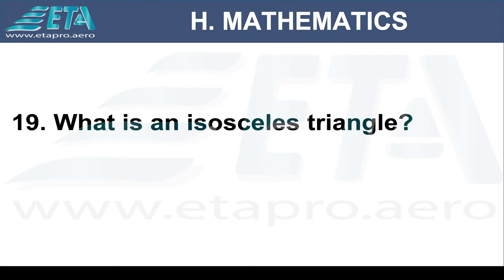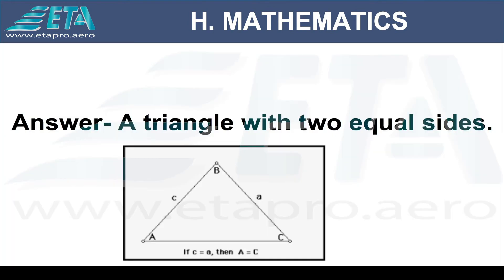What is an isosceles triangle? A triangle with two equal sides.